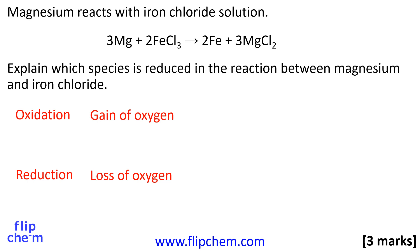Oxidation and reduction can be defined in different ways. The earliest definition of oxidation was the addition of oxygen, and reduction was defined as the loss of oxygen. However, oxygen doesn't appear in many chemical equations, like this one for example.